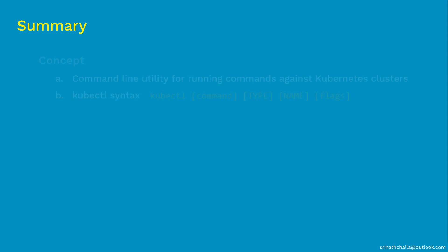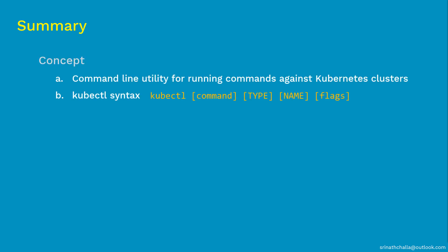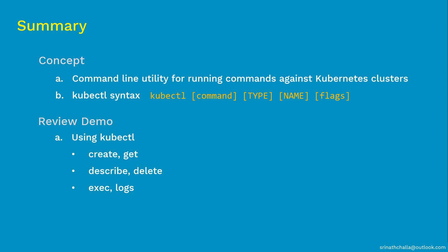So in summary, in this video we first discussed what kubectl is and what it does — kubectl is a command line utility that helps us interact with the Kubernetes cluster and manage all Kubernetes objects. Then we discussed the syntax of the kubectl command. After that, we discussed six common operations you will perform with kubectl inside Kubernetes: create, get, describe, delete, exec, and logs. Finally, we performed those same commands on a live Kubernetes cluster. That's the end of kubectl — thank you so much for watching, and I hope to see you in the next video.